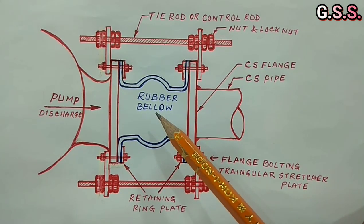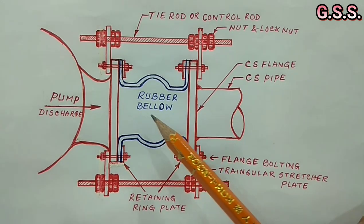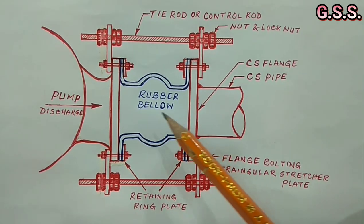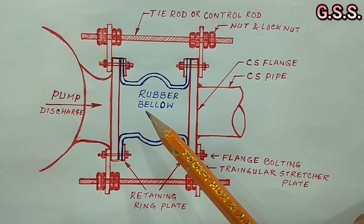Due to internal pressure, bellow will try to expand and axial pressure thrust will be developed across the bellow.